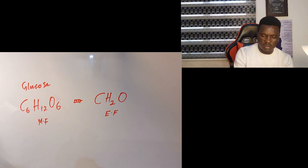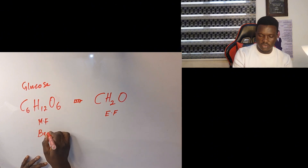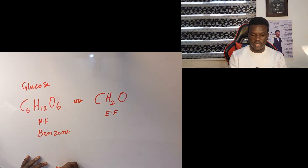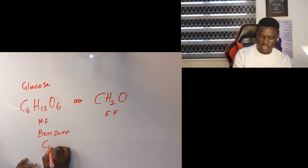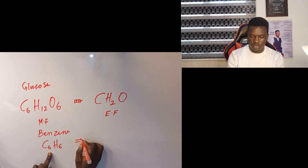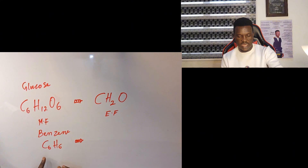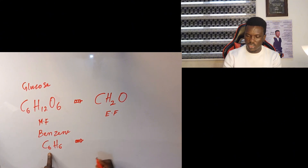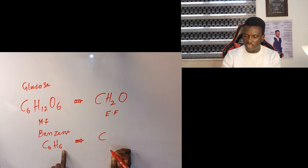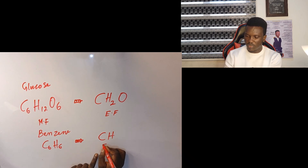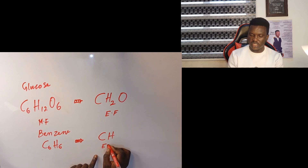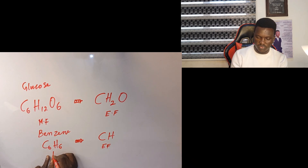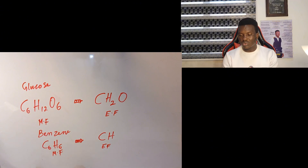Let's take benzene. The formula for benzene is C6H6. Can I simplify this formula? Yes — divide by 6: 6÷6=1 carbon, 6÷6=1 hydrogen, giving CH. So CH is the empirical formula for benzene, while C6H6 is the molecular formula. That is what empirical and molecular formula is actually talking about.